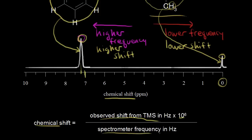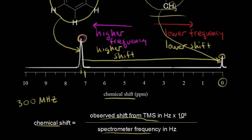For example, let's say we are using an NMR spectrometer operating at 300 megahertz. If you're using a 300 megahertz spectrometer, the protons on benzene absorb a frequency 2,181 Hertz more than the protons on TMS. So TMS is our standard and reference, and this difference between our two signals is 2,181 Hertz. Let's go ahead and figure out the chemical shift for the protons on benzene.